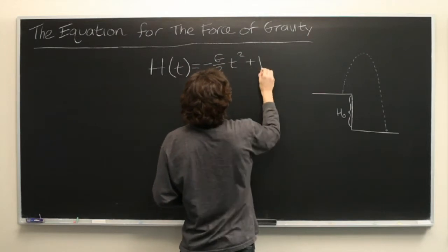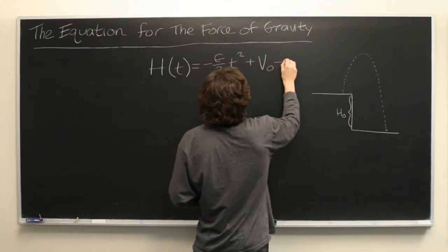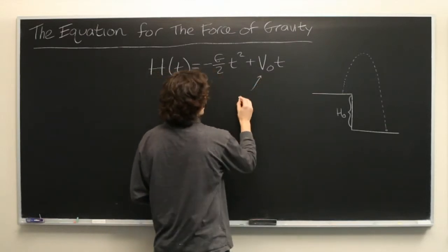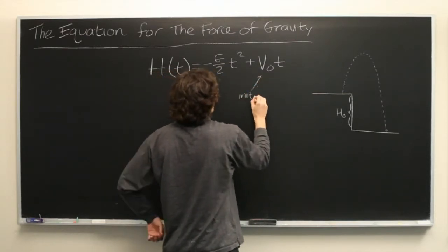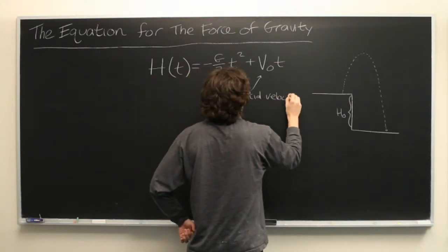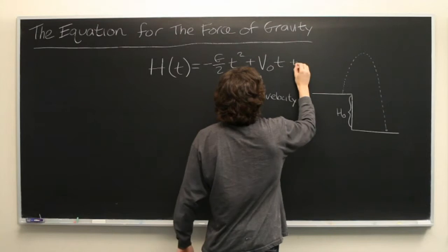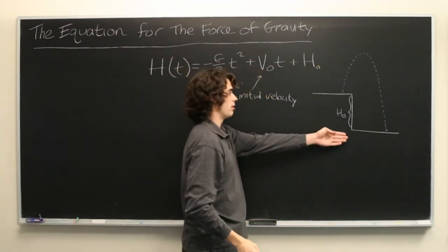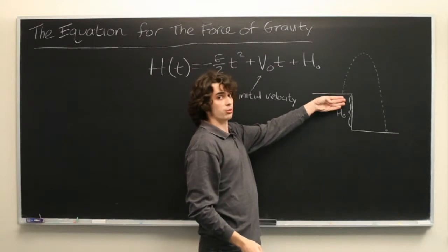Plus the initial velocity of the object times t, which we'll label as initial velocity, plus the initial height, which can be simply thought of as the distance above the ground that the object was tossed from.